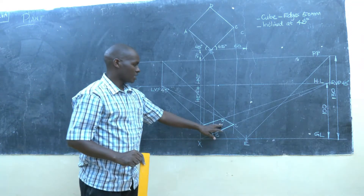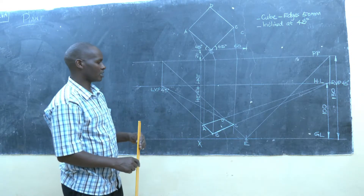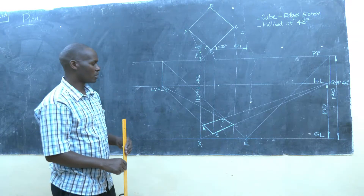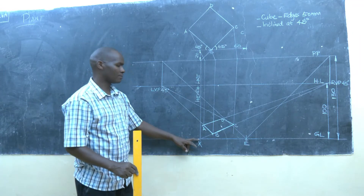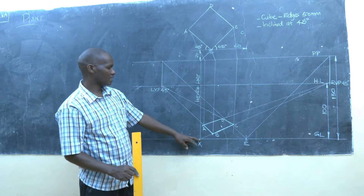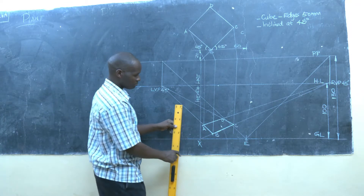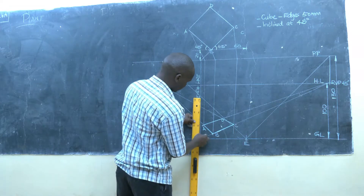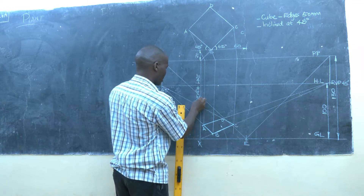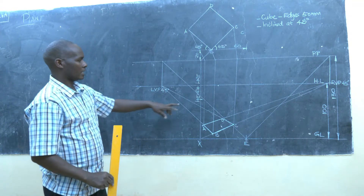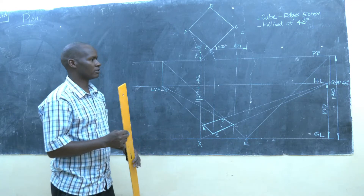We've already generated the base of the cube — points A, B, C, D — in perspective. Now we need to define the height of the cube. We already established our height line, so we measure the height of the cube from point X. Our cube has a height of 50mm, so we measure 50mm from point X, and that point should recede to the right vanishing point.